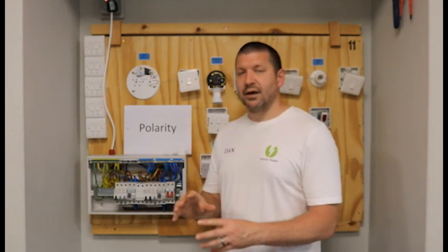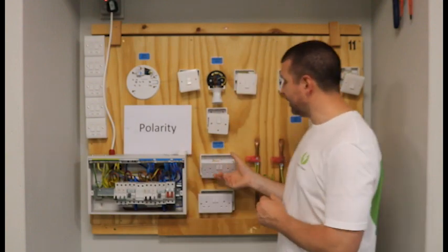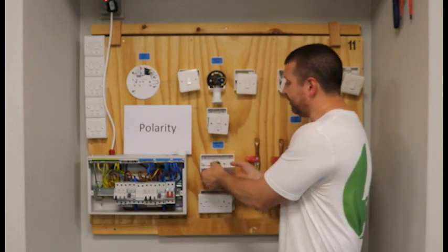Polarity test C simply says are the live cables, the brown cables going into the live connection and are the neutral cables going into the neutral connections and the earth cables into the earth cables. So that's a visual check.